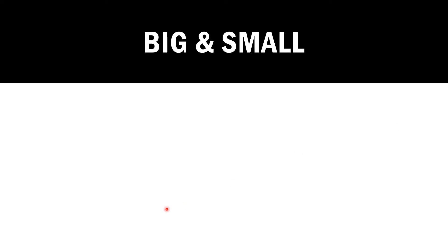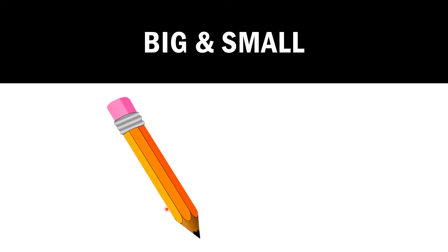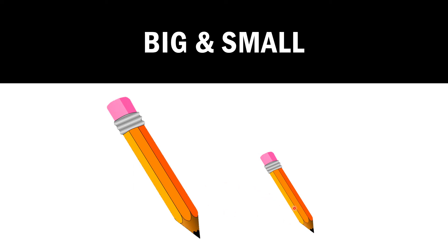Look at this one. Pencil. Another pencil. Can you see? This one is a big pencil and this one is a small pencil. You can check out in your pencil box what kind of pencils you have. Are they big or small? Big, small.